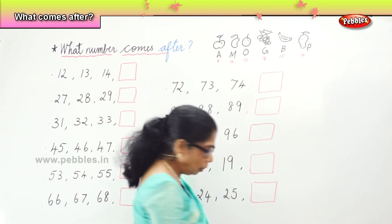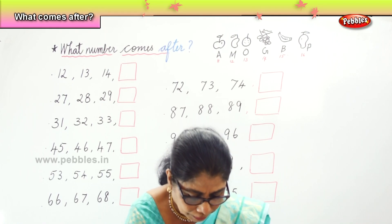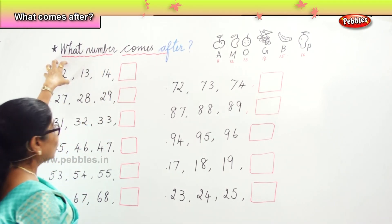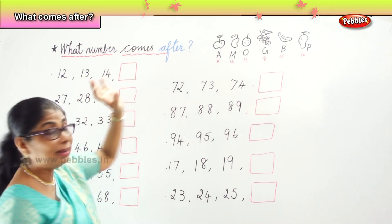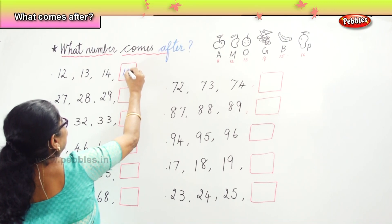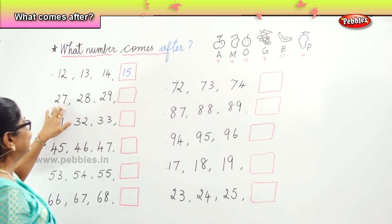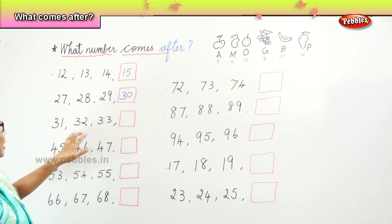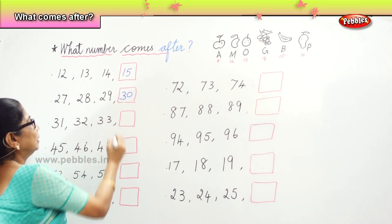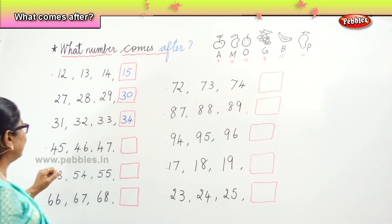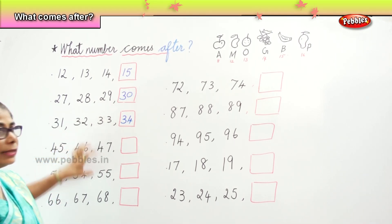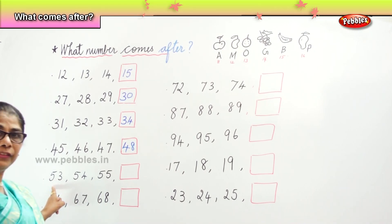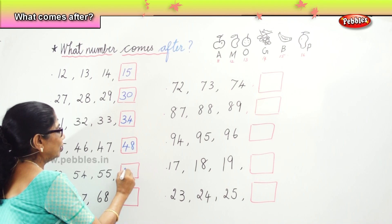Now we are going to fill in all these boxes with the number that comes after. What number comes after 12, 13, 14? 15 — very good. What number comes after 27, 28, 29? 30 — very good. What number comes after 31, 32, 33? 34 — excellent. What number comes after 45, 46, 47? 48. What number comes after 53, 54, 55? 56.